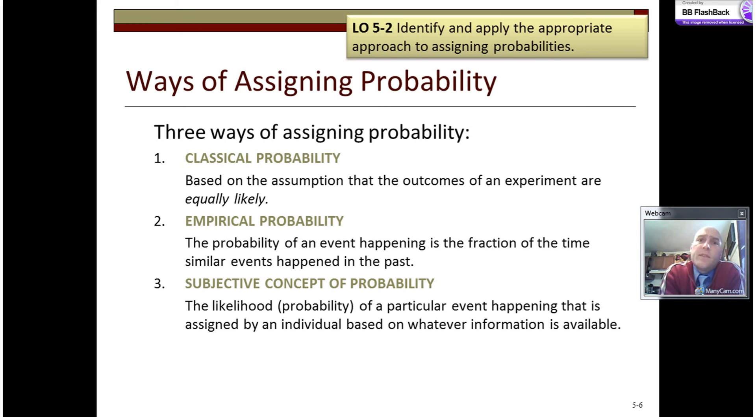There's a number of different ways that we can start now talking about probability once we've got the context of experiment, outcome, and event. The three ways that we assign probability are either classically, empirically, or subjectively. Now classical probability is built on the assumption that all outcomes are equally likely. You flip a coin, we've got two outcomes, heads or tails. Provided it's a fair coin, both outcomes are equally likely.